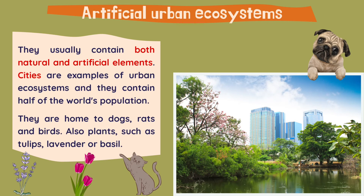Artificial urban ecosystems usually contain both natural and artificial elements. Cities are examples of urban ecosystems and they contain half of the world's population. They are home to dogs and cats, rats and birds, and also plants such as tulips, lavender or basil.